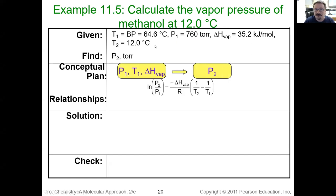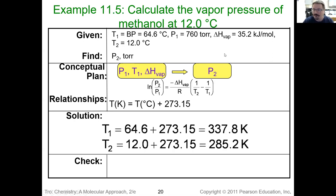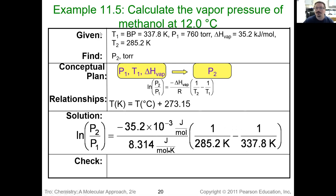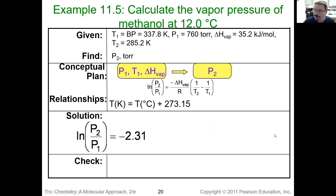Now we can solve for P₂. We're going to take our four variables, plug them into the Clausius-Clapeyron two-point equation. Since the temperature units in R are in Kelvin, we have to convert our temperatures to Kelvin. Now we've got all our values and can plug them right into our equation. It doesn't matter what you make T₁ or P₁ or T₂, just so long as you keep the pressure with its corresponding temperature. So if this is the pressure for the boiling point of methanol and that's P₁, then I have to make that T₁. Plugging these values in, they converted the enthalpy of vaporization from kilojoules per mole to joules per mole so all units cancel, bringing us to negative 2.31.